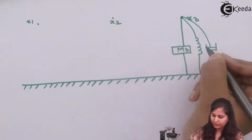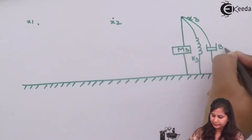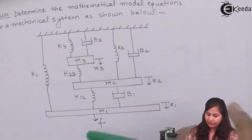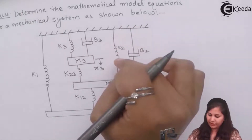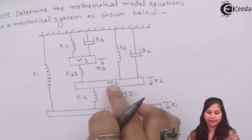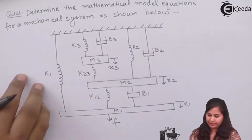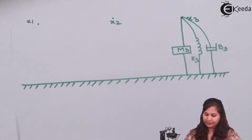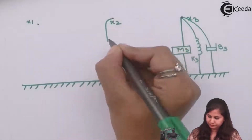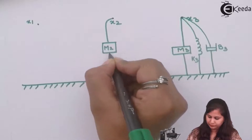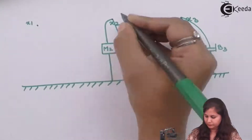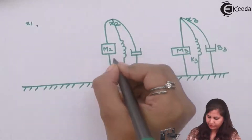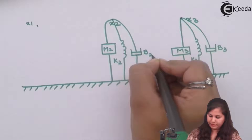At node x3 we connect m3, k3, and b3 between x3 and the reference line. Similarly, between x2 and the reference line we have k2, b2, and m2, so we draw these three elements connecting the x2 node to the reference line: m2, k2, and b2.